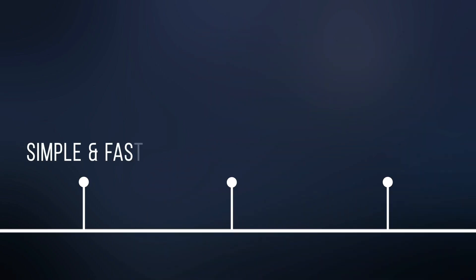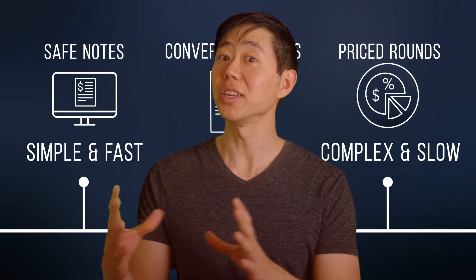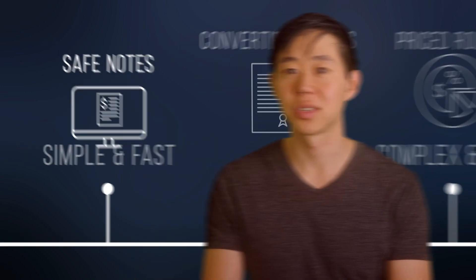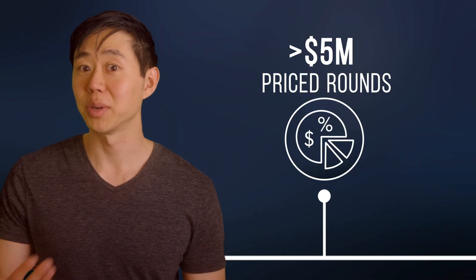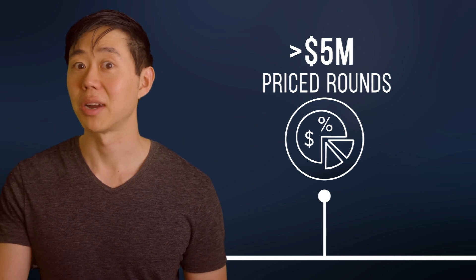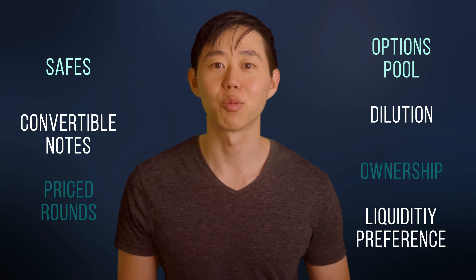To recap, you have three main ways to raise money from VCs that sit on a spectrum from simple and fast to complex and slow, with safes on one side and price rounds on the other. The more money you raise, naturally the more it makes sense to bake in more investor protections. If you raise a few hundred thousand or anything less than a million, that's typically done through a safe; if you raise $5 million or more, more often than not that's done through a priced equity round. Understanding this will help you structure your fundraise to better align incentives and set your company up to be a massive, enduring success. If you found this video useful, please like, subscribe, and comment, and let me know what else you'd like to see covered.